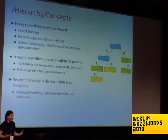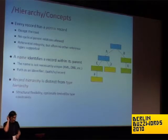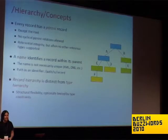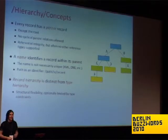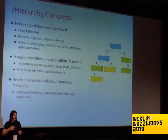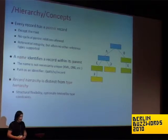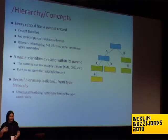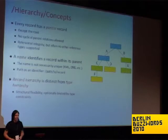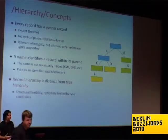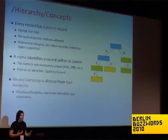So what's a hierarchy? You've all seen these graphs probably at one point or another. It's a way of storing records where basically you have a single constraint: every record except the root has a parent record and there are no cycles in the parent relations — you can't have a parent who is the child of its child. That's the main form of referential integrity that a tree or a hierarchical database supports.